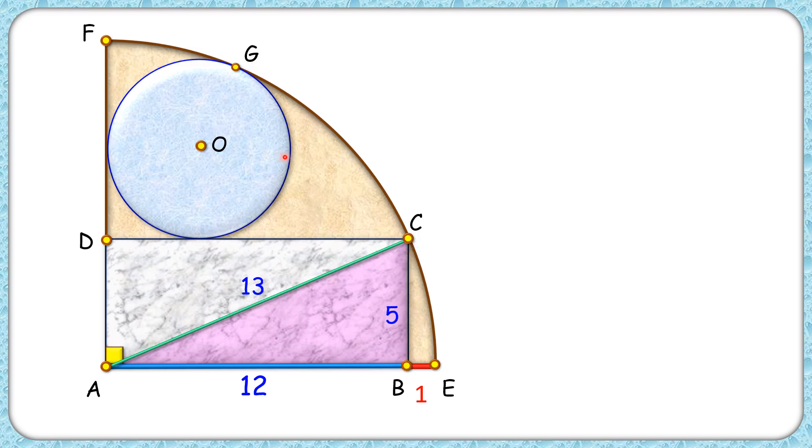Now, this circle and the quadrant are touching each other at point G, and we know that when two circles are touching each other, then their centers and the point of contact lie in a straight line. Thus AOG will lie in a straight line. Here OG is the radius of the circle, let's assume it's capital R, and thus the remaining length AO will be full radius 13 minus R.